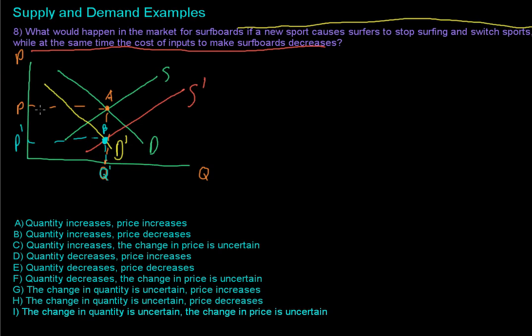So we're going to have a decrease in price, and the change in quantity will be uncertain. The change in quantity is uncertain, and price decreases. And again, that was due to a decrease in demand and an increase in supply.